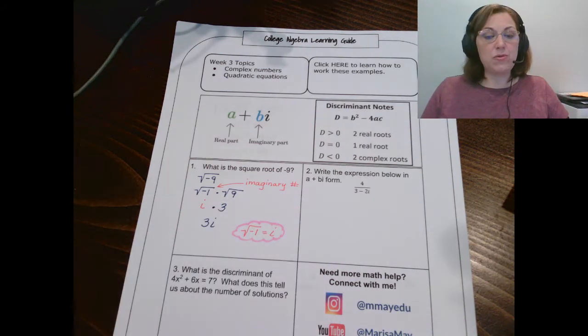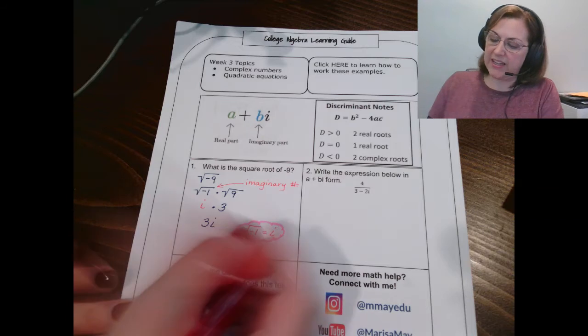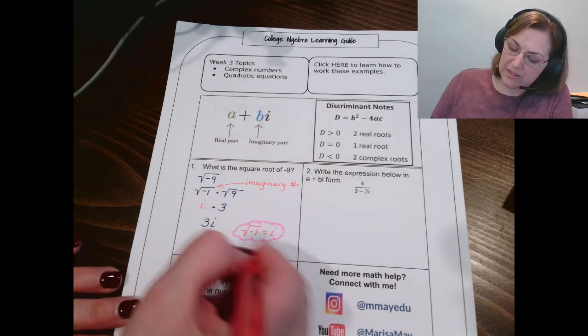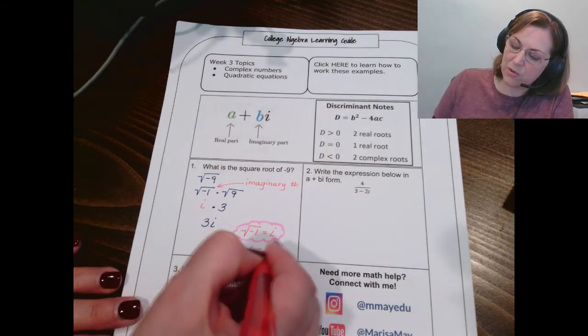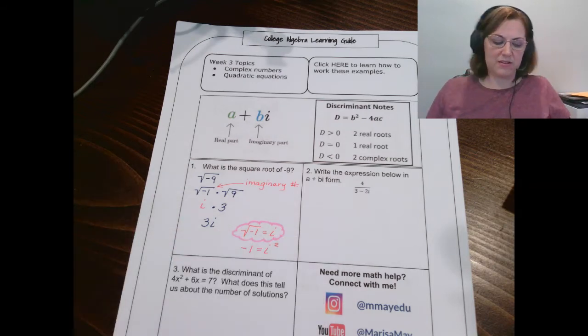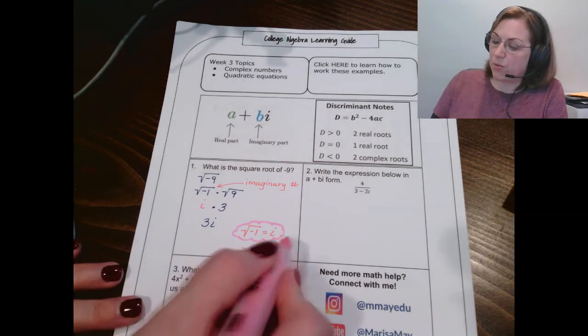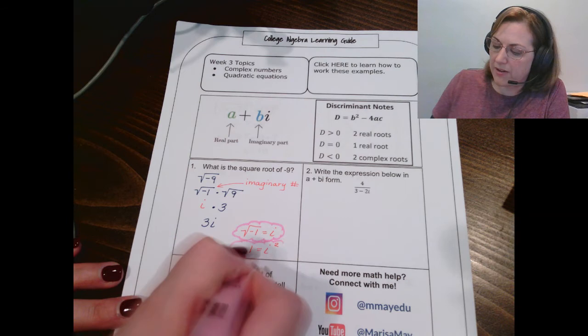And one other thing, you may have seen it like this. If I square both sides, I get that i squared is negative 1. And so, we'll use that as well in our time together today.